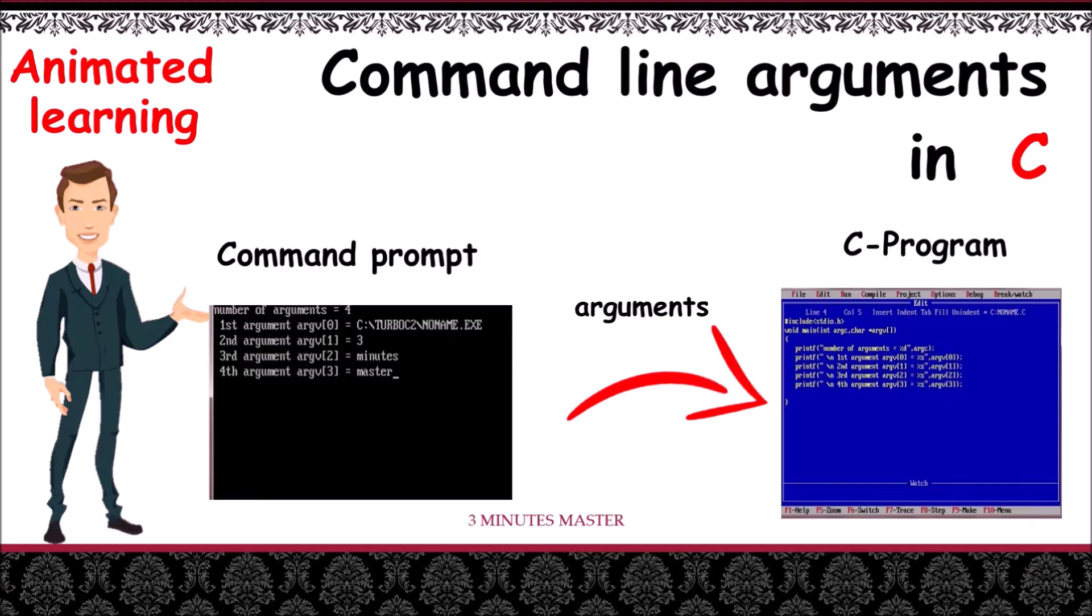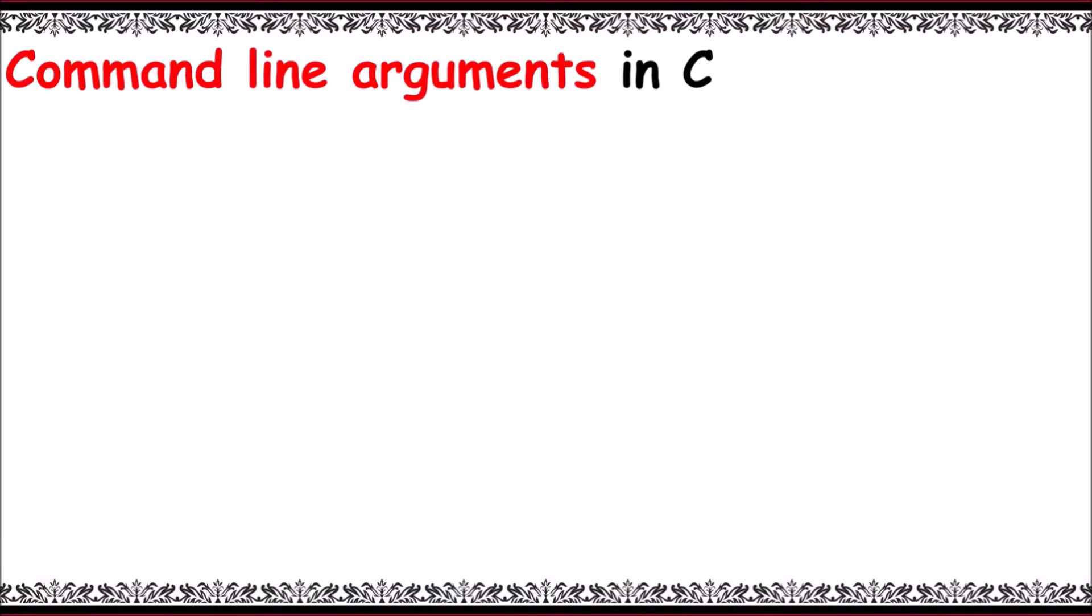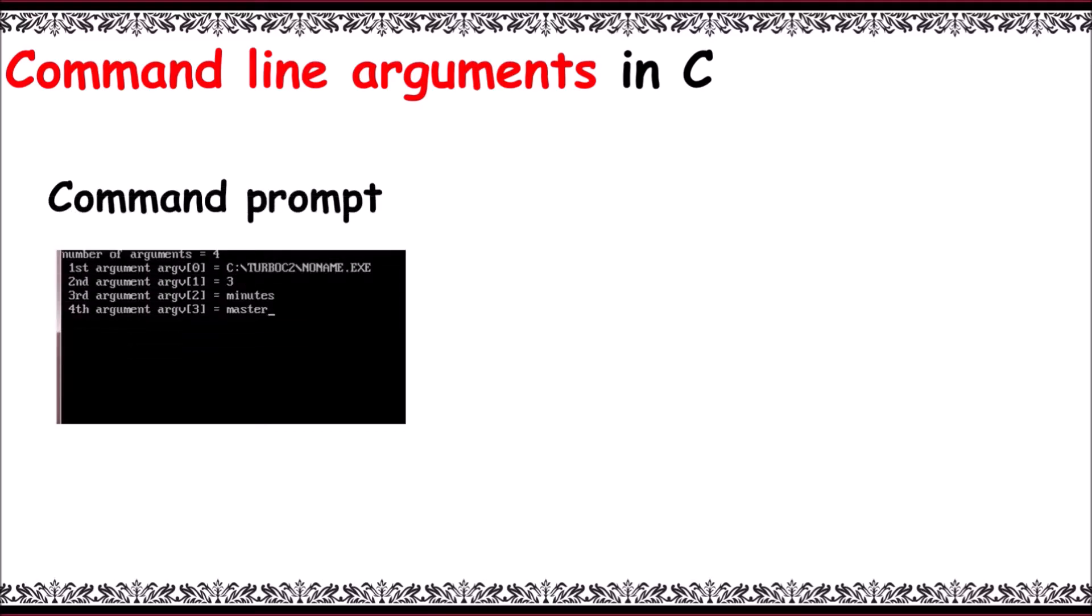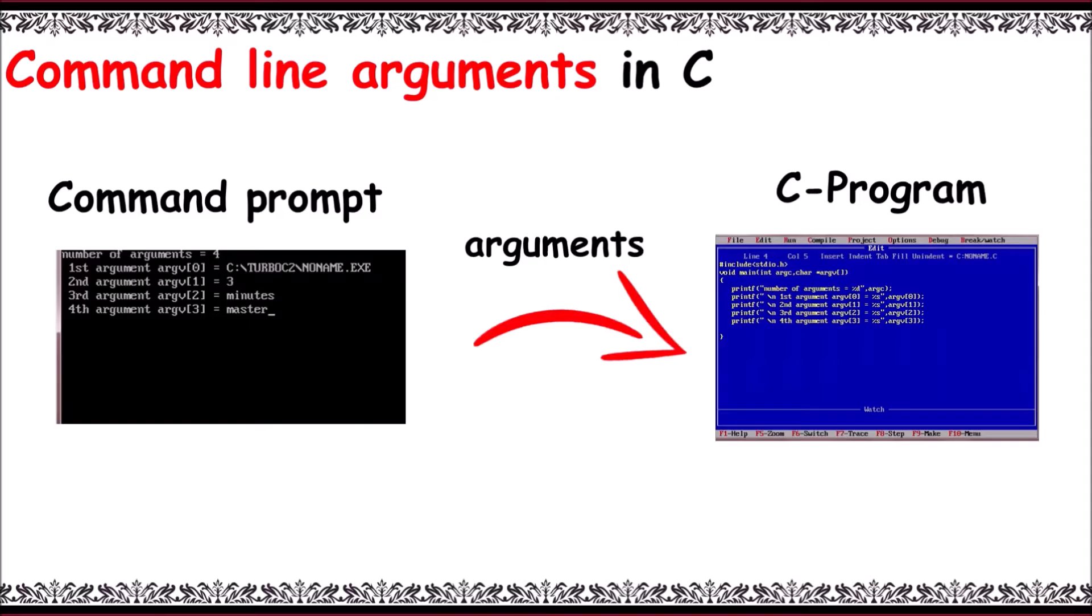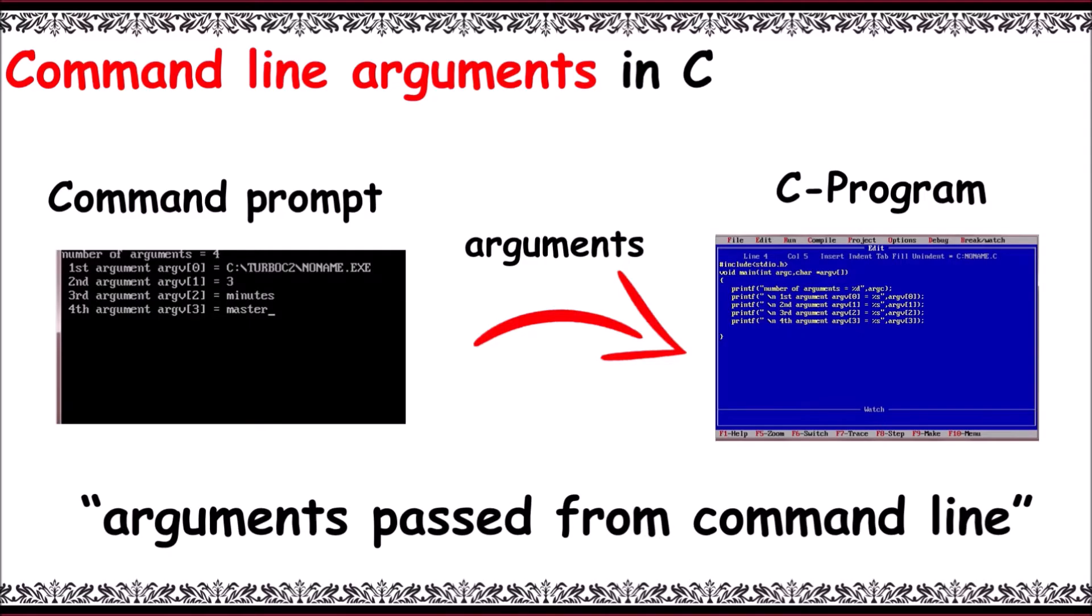Hello guys, welcome to 3 Minutes Master. Let's learn regarding command line arguments. The arguments passed from command line are called command line arguments. Here we write arguments in command prompt and then we send these arguments to C program. Arguments passed from command line to C program we call them as command line arguments.